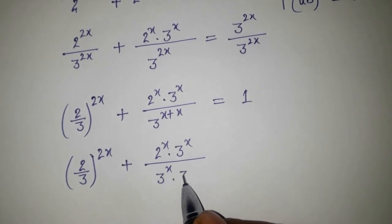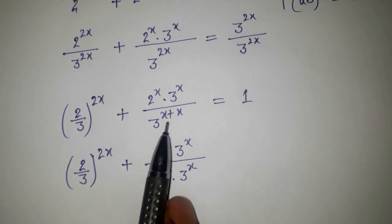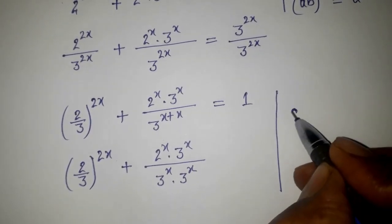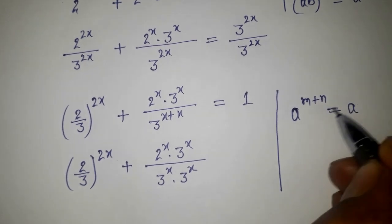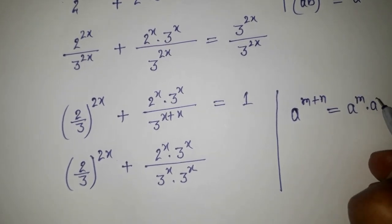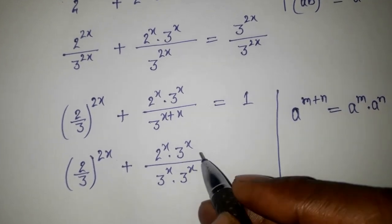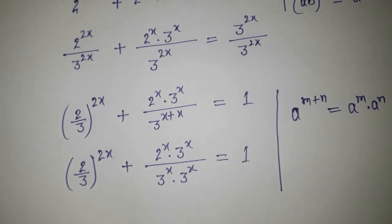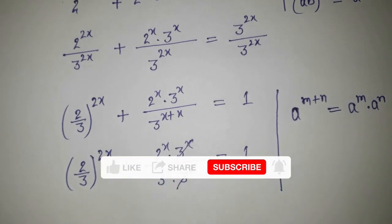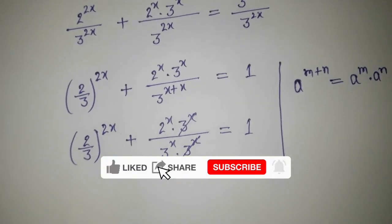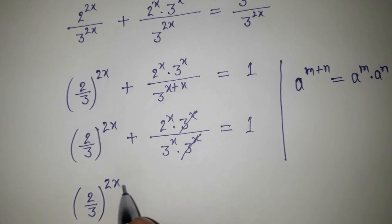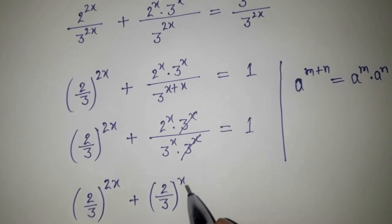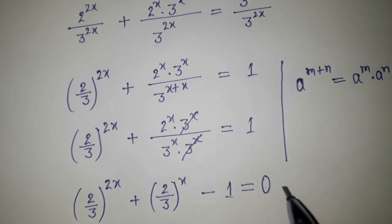Using the identity a^x · a^x = a^(x+x), we can add the powers when the bases are the same. So 3 to the power x into 3 to the power x gives 3 to the power 2x, which cancels. And we now have 2 by 3 to the power 2x plus 2 by 3 to the power x equal to 1.